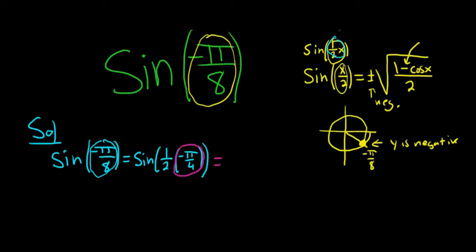We said we're using the negative. So this is negative square root, and it's 1 minus cosine of negative π over 4 all over 2.